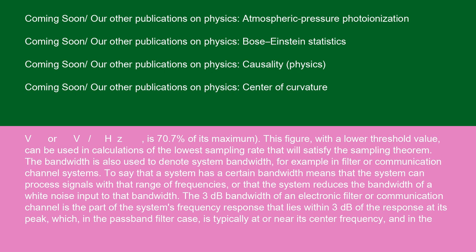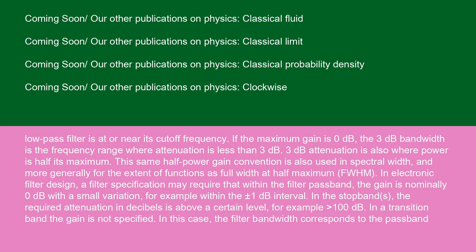The 3 dB bandwidth of an electronic filter or communication channel is the part of the system's frequency response that lies within 3 dB of the response at its peak, which, in the passband filter case, is typically at or near its center frequency, and in the low-pass filter is at or near its cutoff frequency. If the maximum gain is 0 dB, the 3 dB bandwidth is the frequency range where attenuation is less than 3 dB. 3 dB attenuation is also where power is half its maximum. This same half-power gain convention is also used in spectral width, and more generally for the extent of functions as full width at half maximum FWHM.